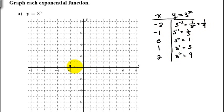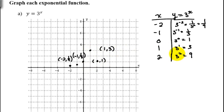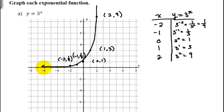Then (-1, 1/3), then (0, 1), then (1, 3), and the last point is (2, 9). This function gets really big really fast and gets really close to the x-axis but never actually crosses it. Drawing a smooth curve gives us a good idea of what this graph looks like. This is the graph of y = 3^x.